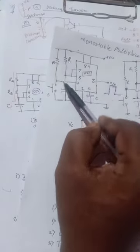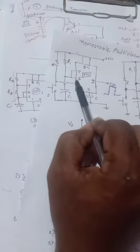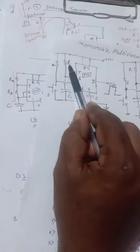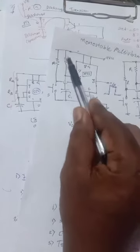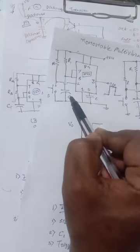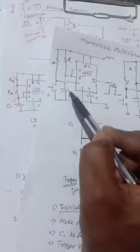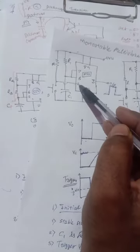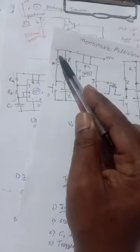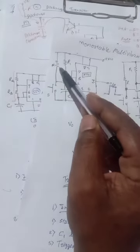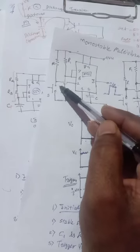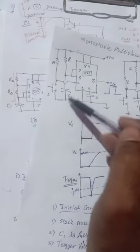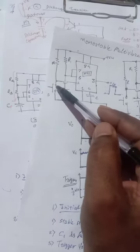In the circuit, pin 6 and pin 7 are shorted. Resistor R1 is connected between VCC and that shorted point, and capacitor C1 is connected between that node and ground. Pin number 2 is the trigger pin — it is connected to VCC through resistor R, and there is a push-on type switch which is grounded.